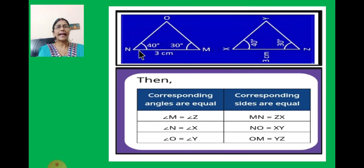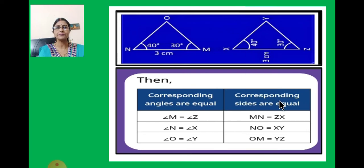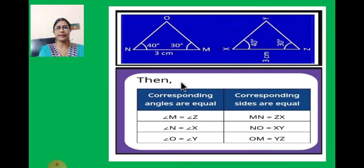You can see this angle is 40 degrees and this angle is also 40 degrees. This angle is 30 degrees and this angle is also 30 degrees. And this side is 3 cm and this side is also 3 cm. So the corresponding angles: angle M is equal to angle Z — both are 30 degrees. Angle N is equal to angle X — both measure 40 degrees. And angle O will be equal to angle Y. These are the corresponding angles which are equal.